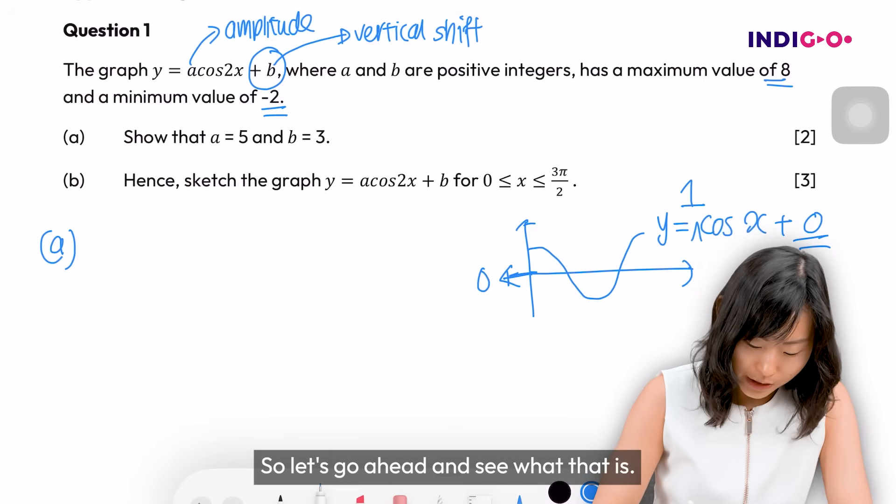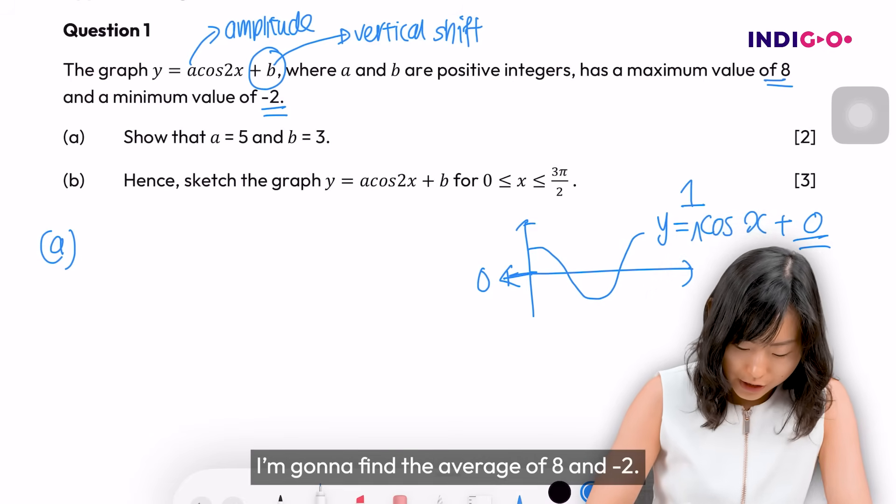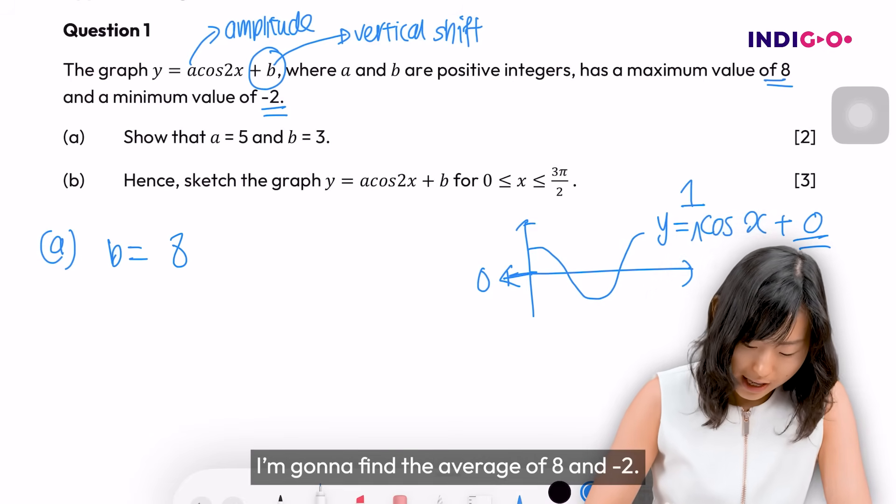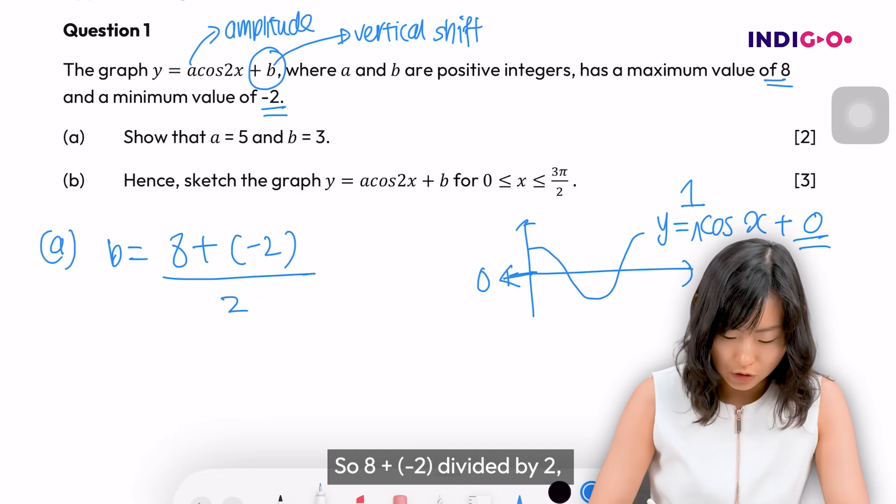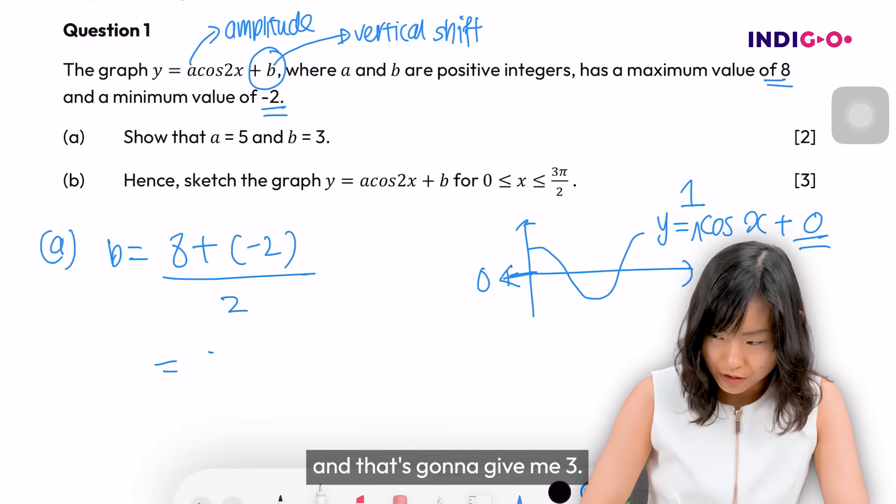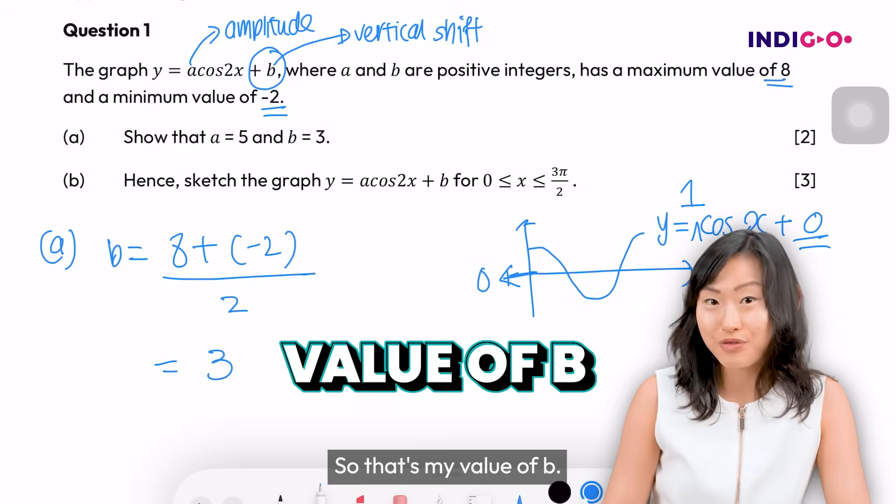So let's go and see what that is. I'm going to find the average of 8 and minus 2. So 8 plus negative 2 divided by 2, and that's going to give me 3. So that's my value of b.